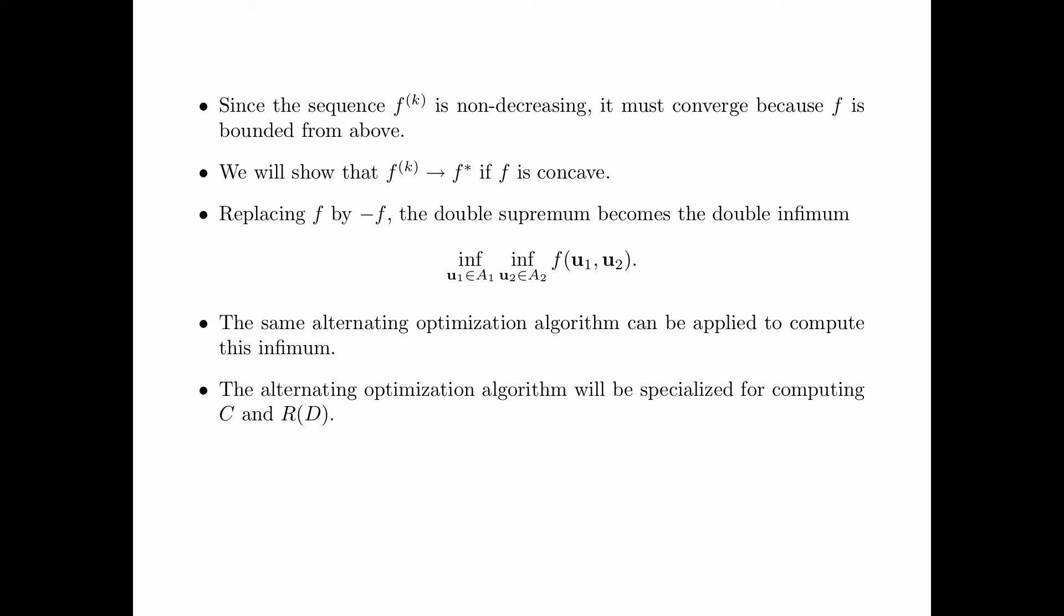In the next section, the alternating optimization algorithm will be specialized for computing the capacity C and the rate-distortion function R(D).